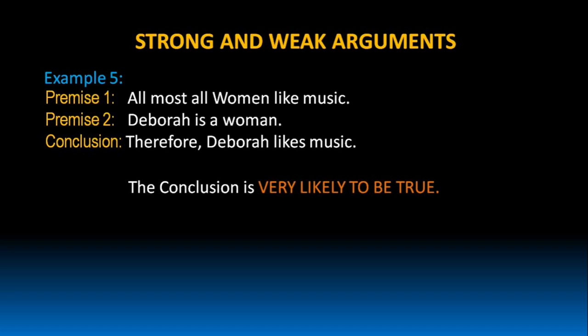Why do I say the conclusion is very likely to be true? Because Premise 1 says, 'almost all women like music.' The words 'almost all' represent a group of women which contains most of the women. So there is very high probability for Deborah to be part of that group. That is why we can conclude Deborah likes music. So, we can say the conclusion is very likely to be true. Hence, this argument can be treated as a very strong argument.